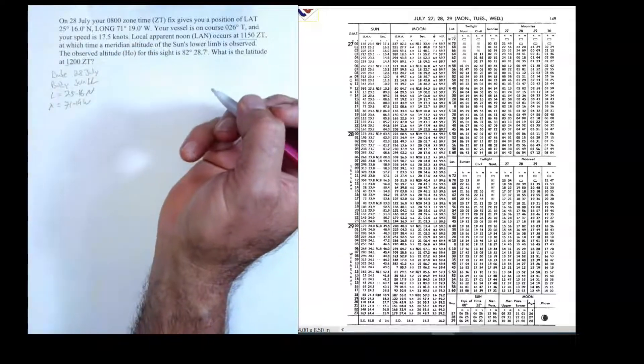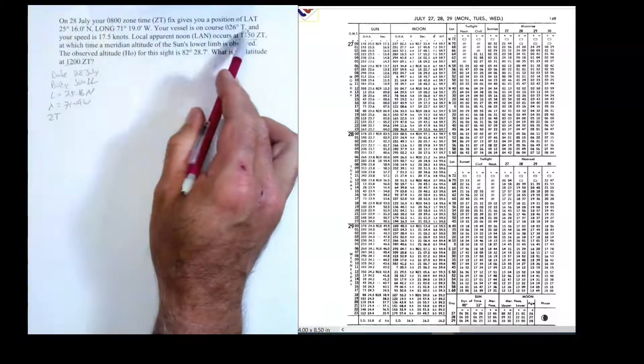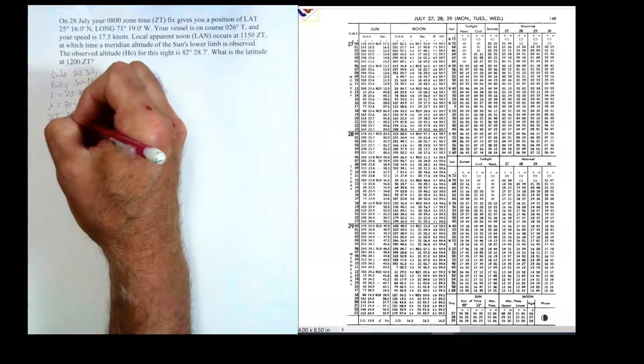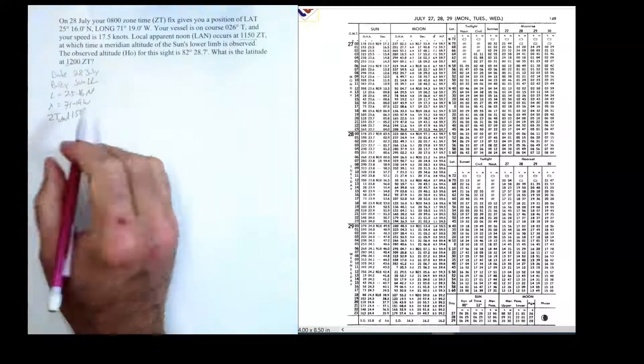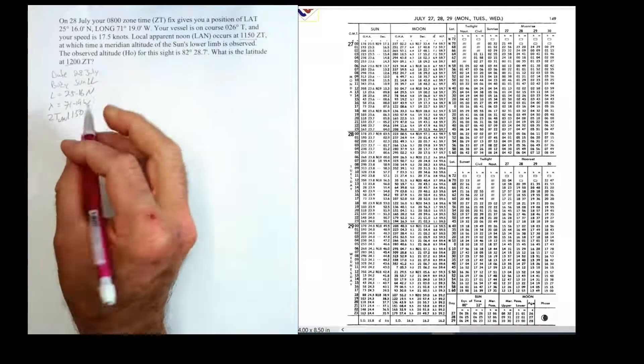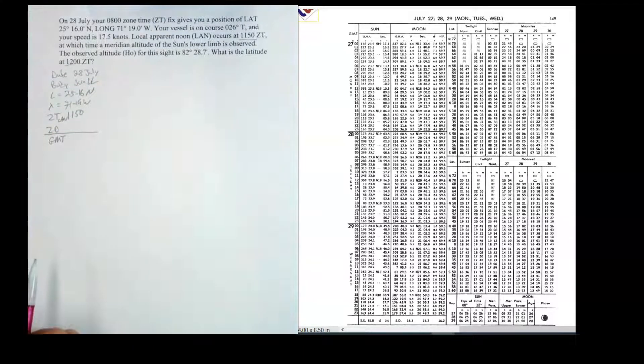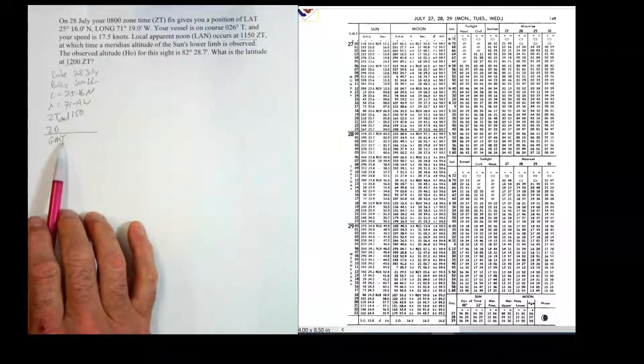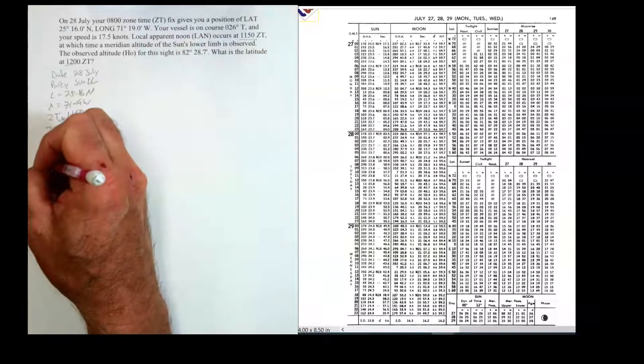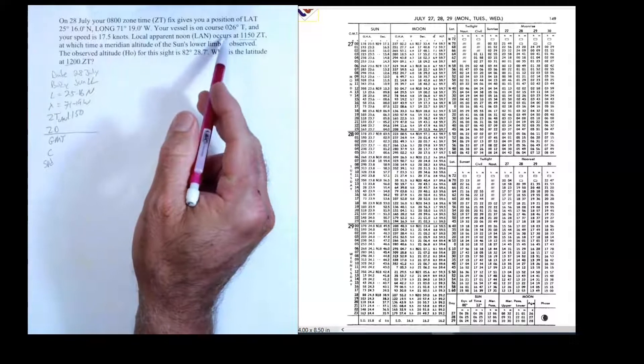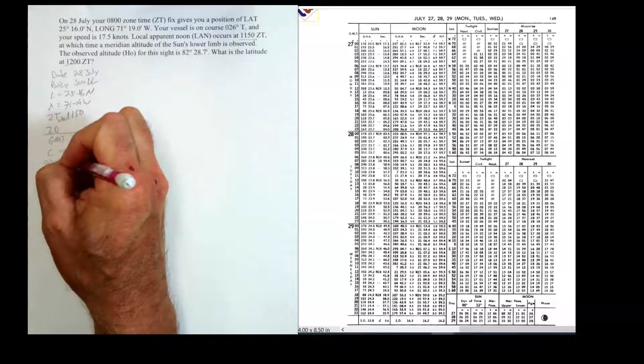71.19 west. Our zone time - I'm not going to put this 8 o'clock in, I'm going to put the zone time of 1150. That's the zone time of LAN. Now, I am going to use this longitude because I'm going to use that for my zone description, and then I'm going to get GMT. And the reason I'm going to need GMT is because I'm going to need to calculate my declination. I'm also going to want to know what my course is and my speed. So my course is 026, and my speed is 17.5 knots.